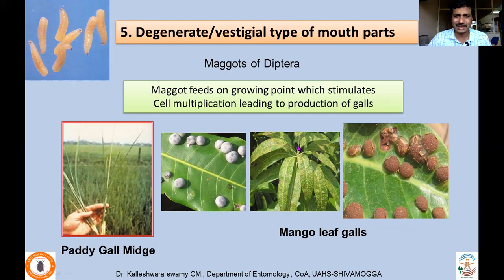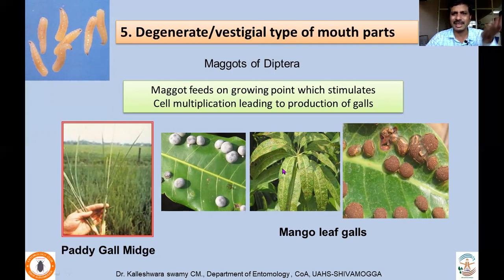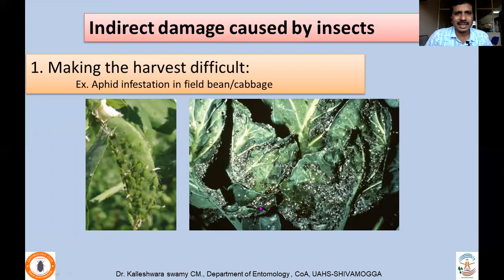While both biting/chewing and piercing/sucking insects have well-developed mouthparts, some insects like cecidomyiids, maggots of diptera, and tephritids do not have well-developed mouthparts — the mouthparts are vestigial and underdeveloped — yet they are still able to feed and cause damage. Examples include paddy gall midge and mango leaf gall-making insects or gall midges, which are very serious pests; galls appear on leaves and various other plant parts where these insects feed.